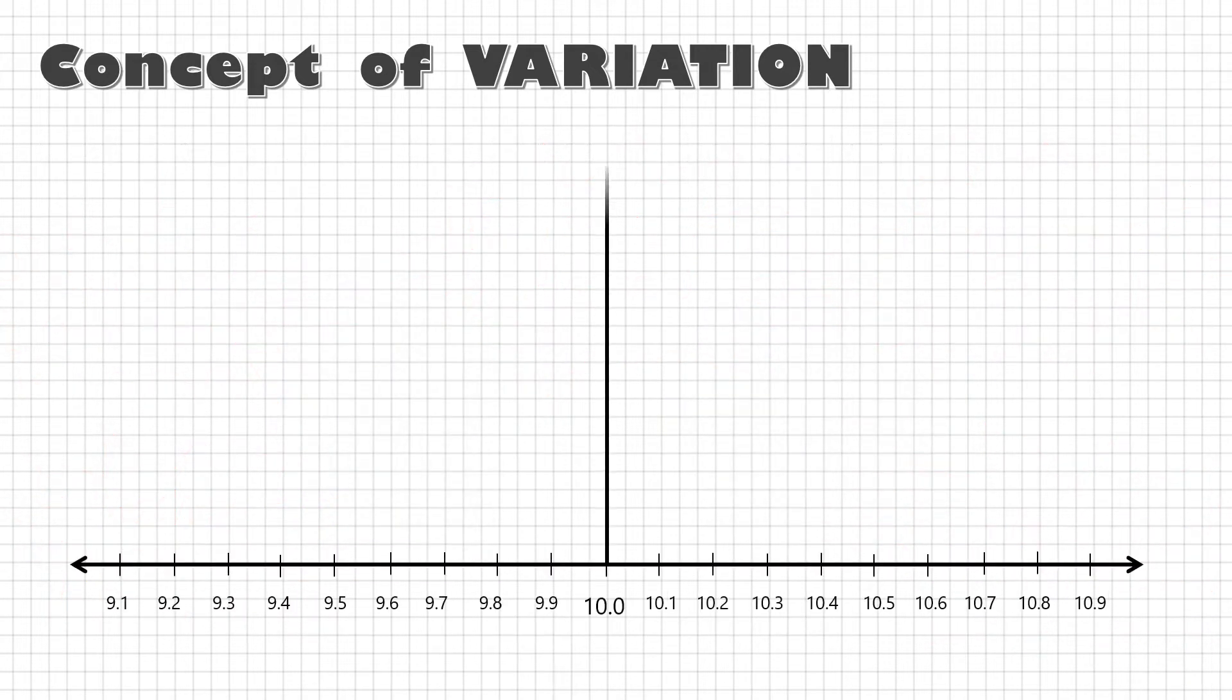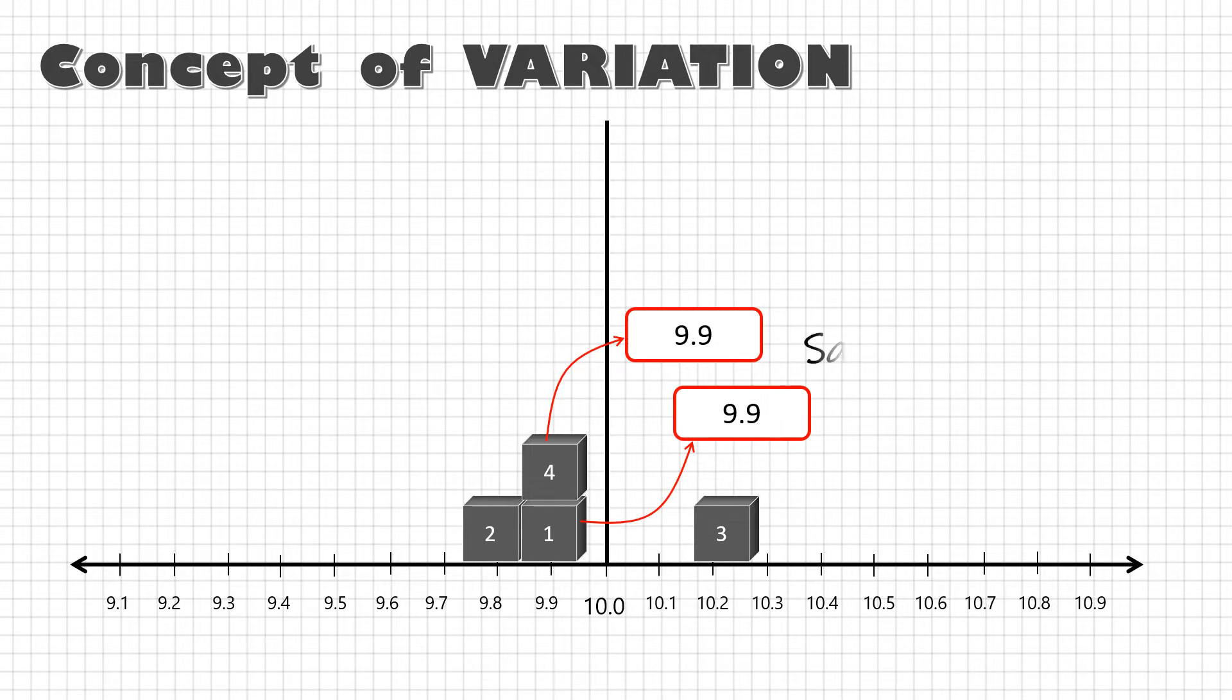Basically the principle of variation says if I target to make parts with dimension 10 mm, then the first actual part could be 9.9 and then due to principle of variation, second part could be 9.8, then 10.2, then 9.9 again. Now these two parts look same at this level but will be different at this level.